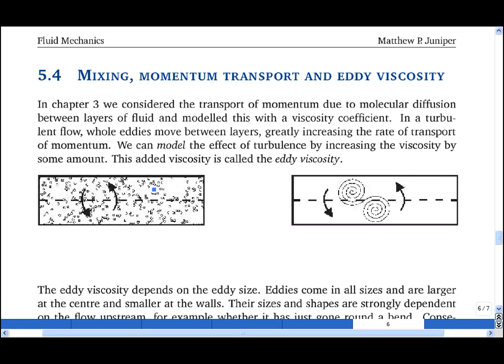Let's consider two layers of fluid. In a laminar flow, the only transport mechanism between these two layers is molecular mixing, and we saw in chapter 3 that the way we model the shear stress as a function of the velocity gradient is via the viscosity mu.